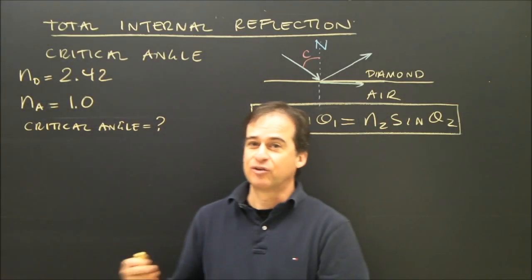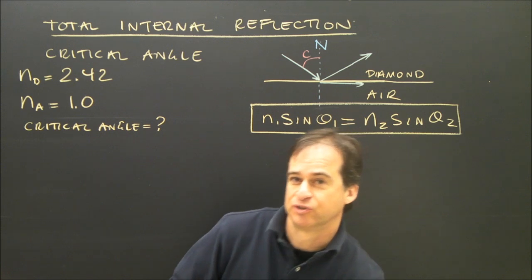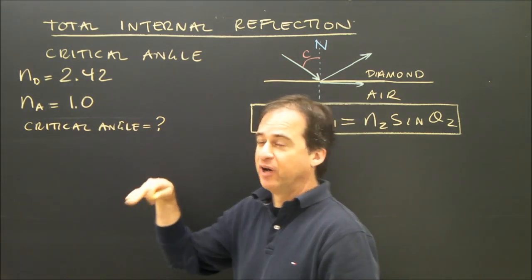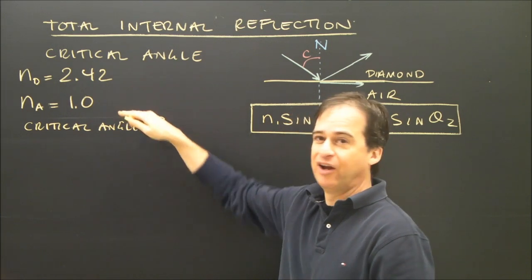Okay, now we're going to calculate the critical angle from one material to another. So I'm going to have a light ray go from diamond into air.